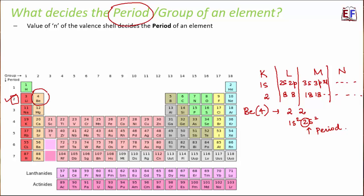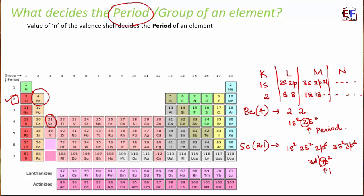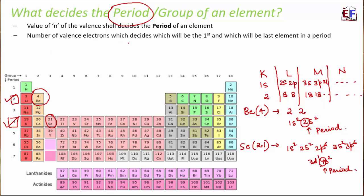Taking another example: scandium has atomic number 21 with configuration 1s² 2s² 2p⁶ 3s² 3p⁶ 4s² 3d¹. The outermost shell is 4s, so n=4, meaning scandium belongs to the fourth period. The number of valence electrons also determines the first and last element of each period — the first element of any period will have one valence electron.